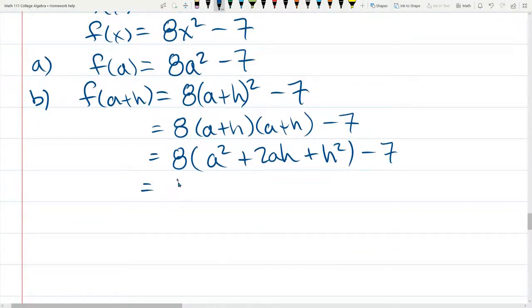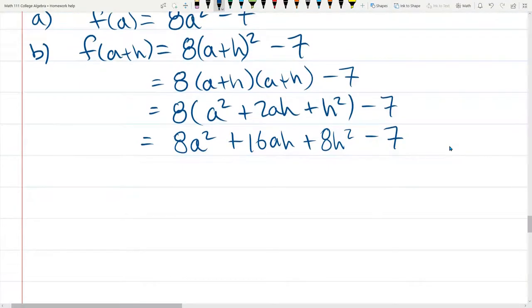I'm going to go ahead and distribute the 8 across. 8a squared plus 16 a h plus 8 h squared minus 7 is outside the parentheses.